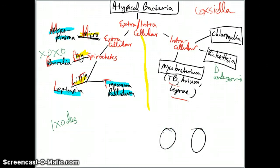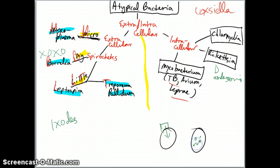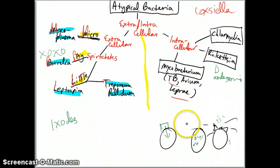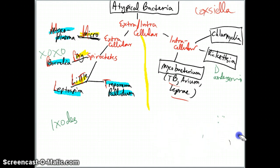The life cycle of Chlamydia: you have a cell, and Chlamydia latches on as an elementary body, gets inside, then transforms to a reticulate body. Reticulate bodies are the form that replicates. As it replicates and becomes numerous, it bursts out of the cell, releasing reticulate bodies that retransform into elementary bodies. The process starts over as they latch on as elementary bodies. Just know: the replicating body form is the reticulate body.